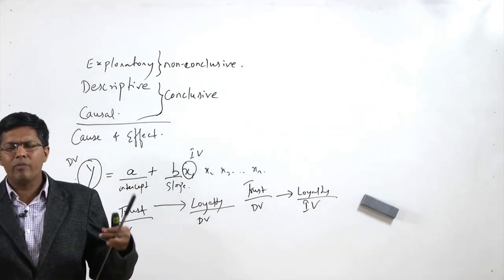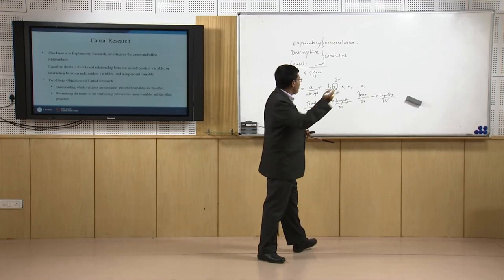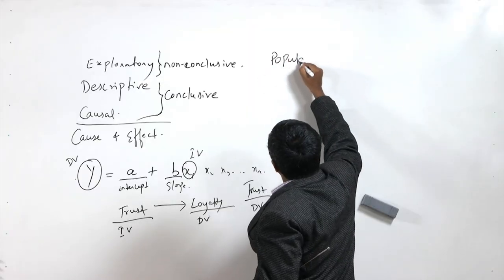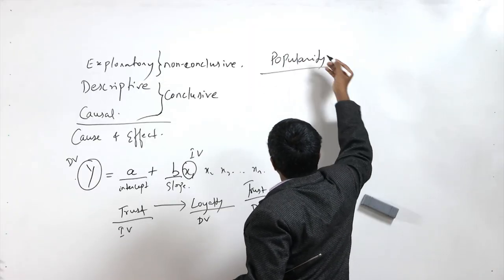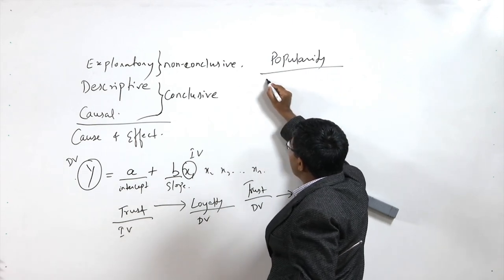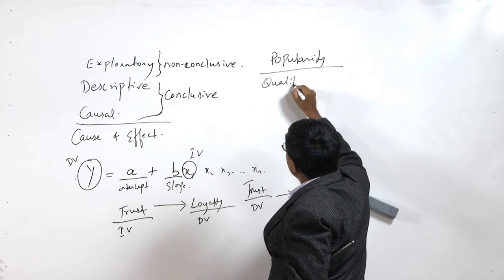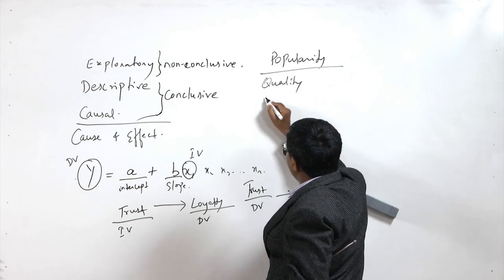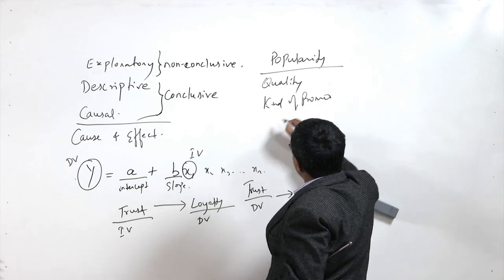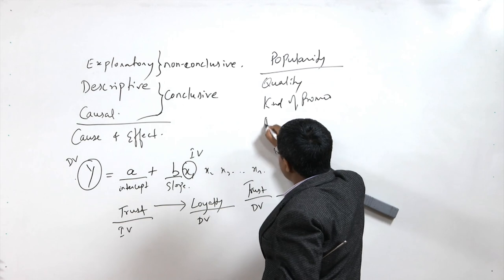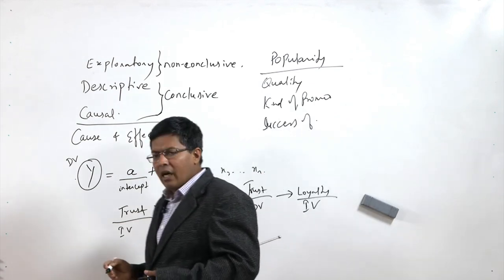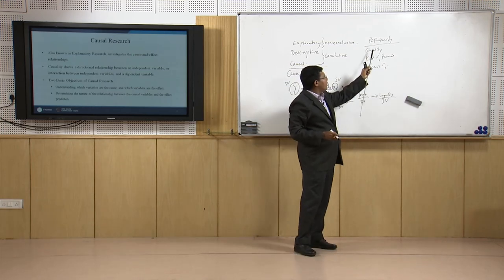One is to understand — among several variables — what affects the popularity of a brand or company. It could be several factors: the quality, the kind of promotion, the record or success factors. Popularity may depend upon these.